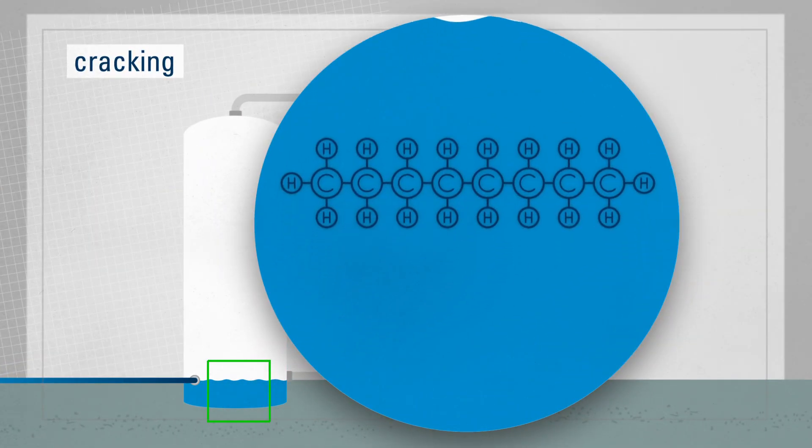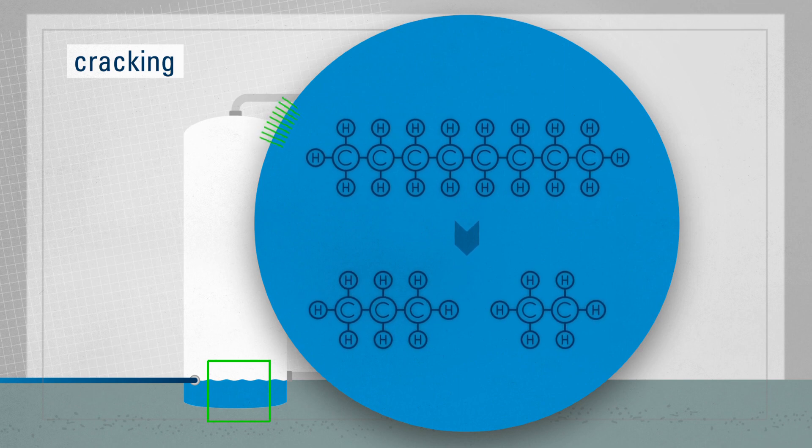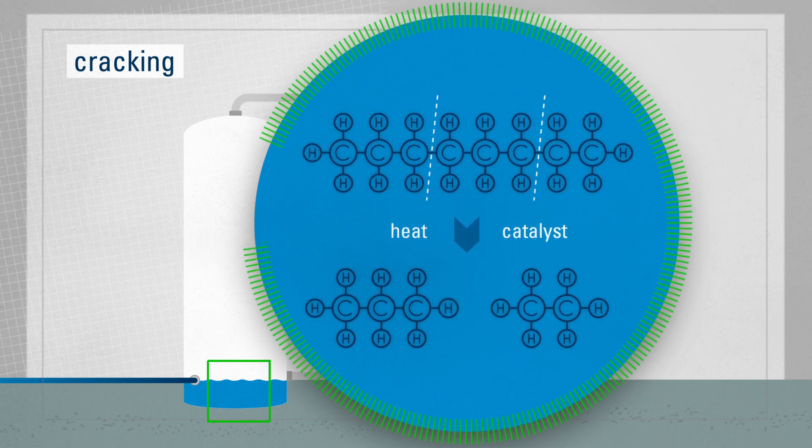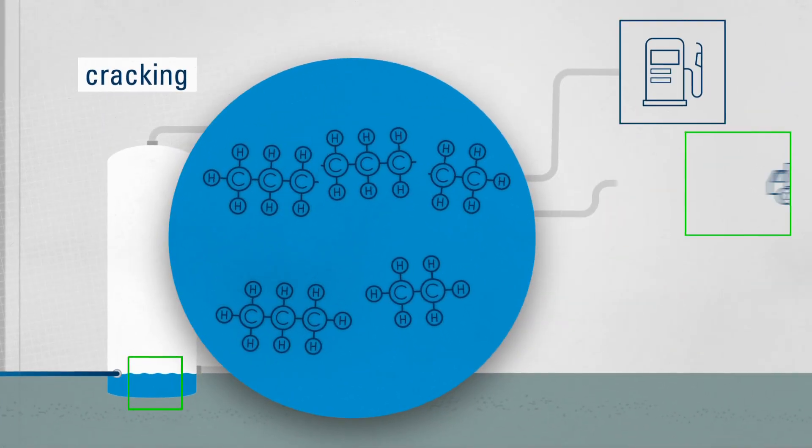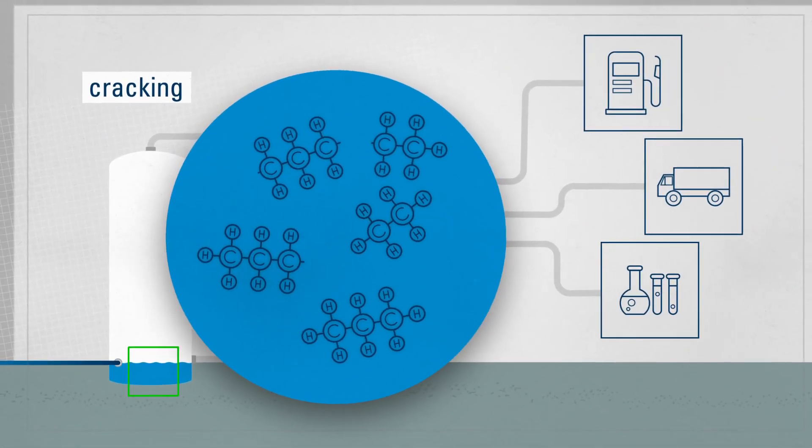With cracking, the large chains of hydrocarbon molecules are used to make smaller chains. Heat or a catalyst is applied to produce components that are used as additives for gasoline, diesel, and petrochemicals.